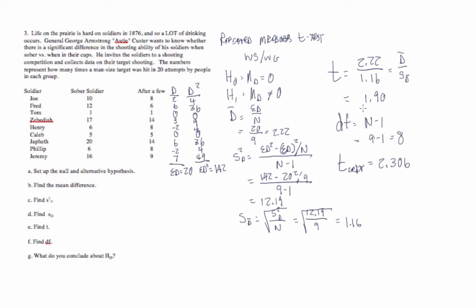Now we compare our t obtained, 1.90, to our t critical, 2.306. And because our t obtained is less than our t critical, we fail to reject the null hypothesis, that there's no difference between our treatment conditions. So what this means conceptually is that there is no statistically significant difference between the shooting of the soldiers when they're sober versus after they've had a few drinks. And so that is how to do a repeated measures t test.